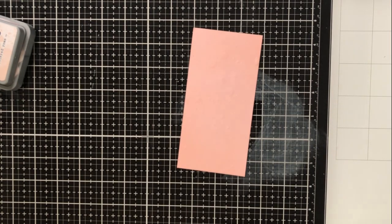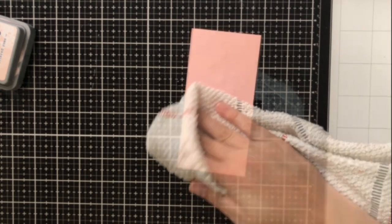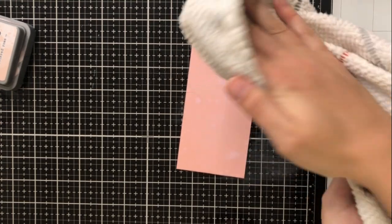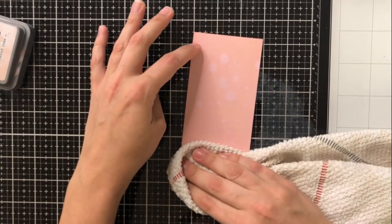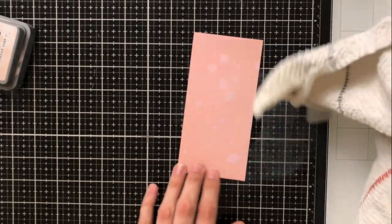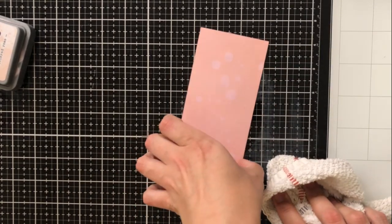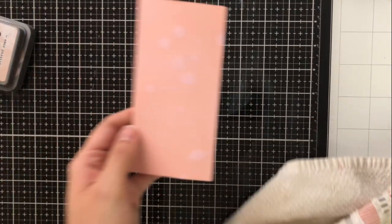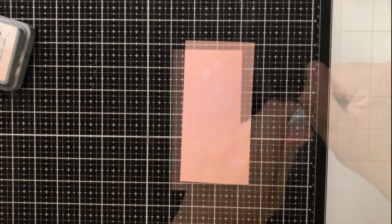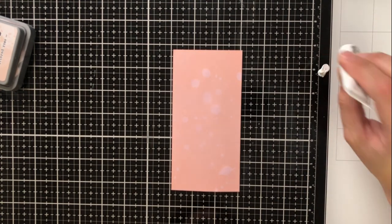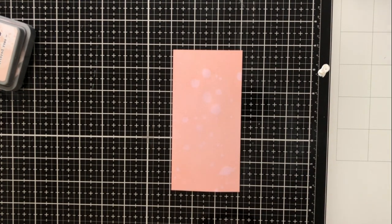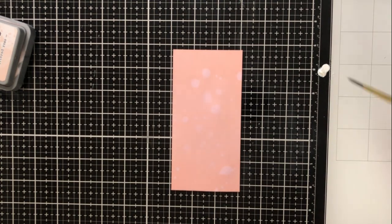So there I go spraying that water on. I'm using my distress sprayer and the great thing about this distress sprayer is that if you pull the water trigger back a little slower you'll get larger drops and if you do it quickly or fast you get some really fine mist. So you get to really play around with the type of look that you want when you're spraying this water on.